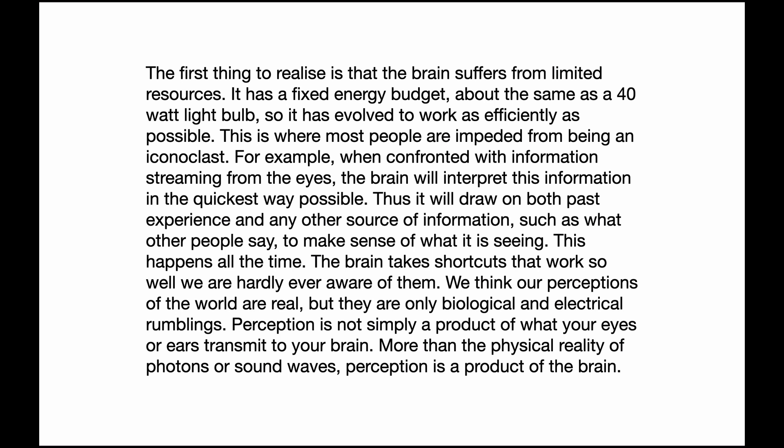The first thing to realize is that the brain suffers from limited resources. It has a fixed energy budget — about the same as a 40-watt lightbulb — so it has evolved to work as efficiently as possible. This is where most people are impeded from being an iconoclast. For example, when confronted with information streaming from the eyes, the brain will interpret this information in the quickest way possible, drawing on past experience and other sources to make sense of what it sees. The brain takes shortcuts constantly, and we are hardly ever aware of them.